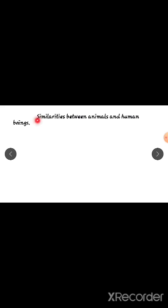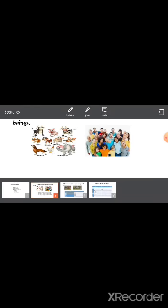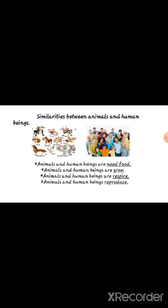First we learn about the similarities between animals and human beings. Similarities means the same things we observe in both animals and human beings. This is the picture of animals and this is the picture of human beings. First we learn the similarities between animals and human beings.